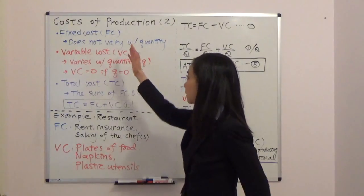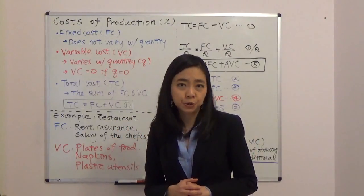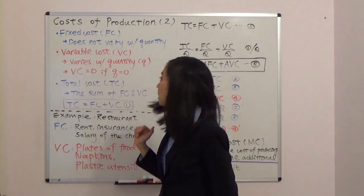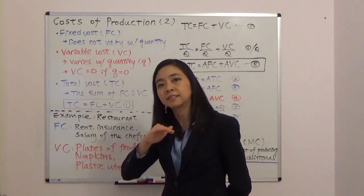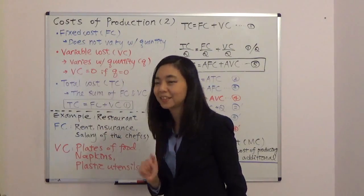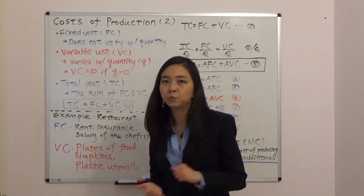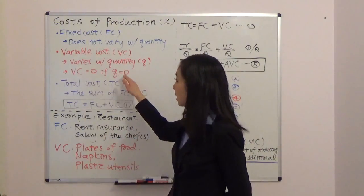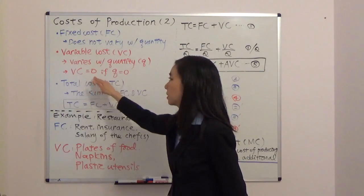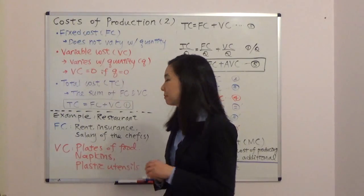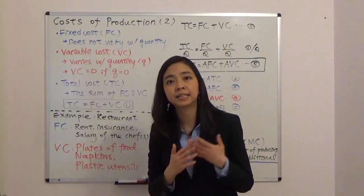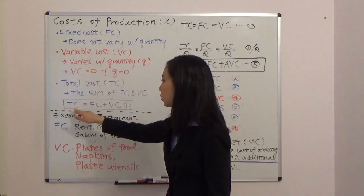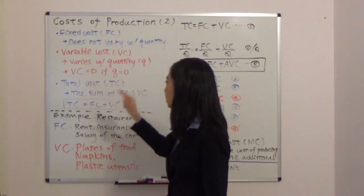By definition, fixed cost is fixed. It does not vary with your quantity. It doesn't matter how much or how little you produce — fixed cost is something that you have to pay; it's the same. Now variable cost by definition will vary with quantity. The more you produce, the higher the variable cost, and if you produce nothing so the quantity is zero, then your variable cost is equal to zero. Total cost by definition is the sum of fixed cost and variable cost, so our first equation is: total cost is equal to fixed cost plus variable cost.